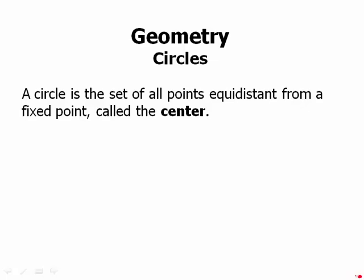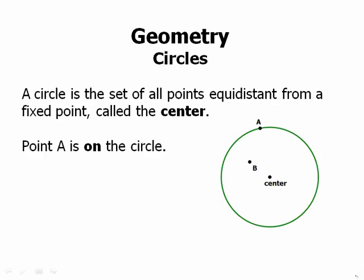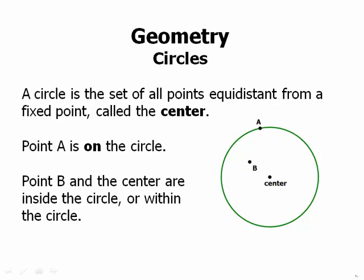Now we can talk about circles. A circle is a set of all points equidistant from a fixed point called the center. Here's an example of a circle. Point A is on the circle. Point B and the center are inside the circle or within the circle. It's very important to understand the distinction of on the circle versus inside the circle.